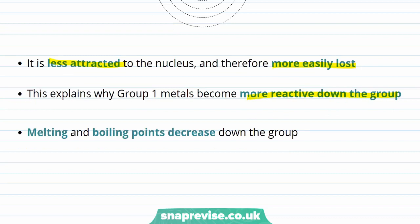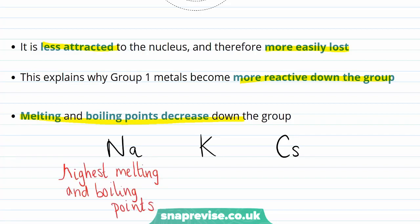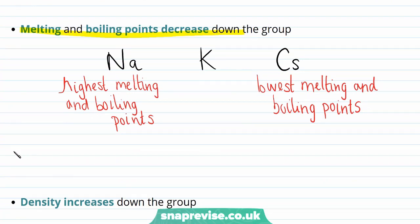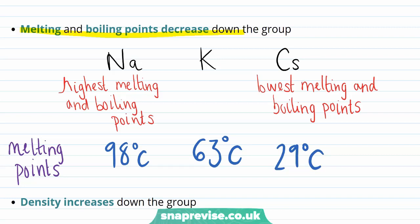Another trend for the Group 1 metals is that their melting and boiling points decrease as you travel down the group. Considering sodium, potassium and caesium — where sodium is highest in the group, followed by potassium, then caesium — you would expect sodium to have the highest melting and boiling points and caesium to have the lowest. This is exactly what we see: sodium has the highest melting point of the three at 98°C, caesium the lowest at 29°C, and potassium intermediate at 63°C. You can use this trend to predict that lithium will have an even higher melting point than sodium.